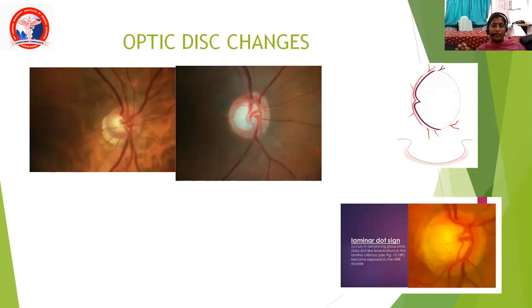These pictures show the lamina dot sign — the pores in the lamina cribrosa are seen clearly — and thinning of the neuroretinal rim.